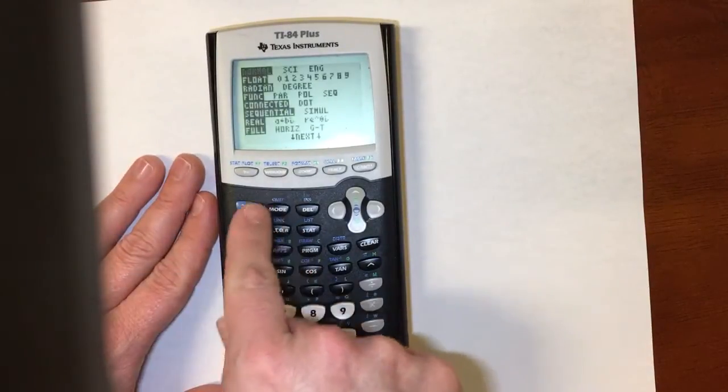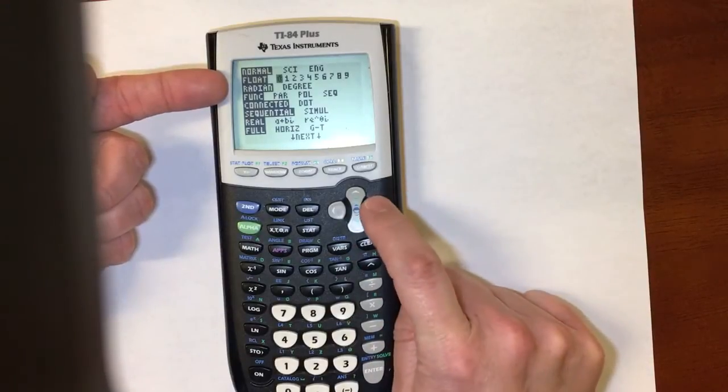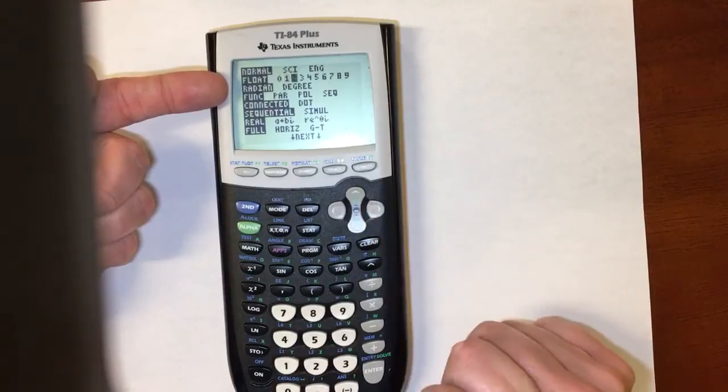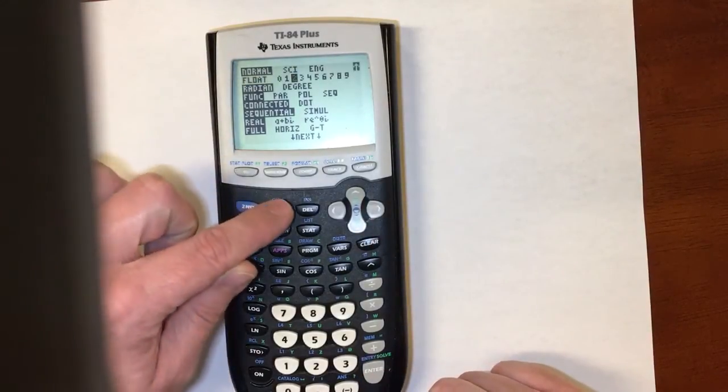So you can go to mode. We're going to go to float for the decimal. And we're going to arrow over for however many places we want. So let's say I want two decimal places. So I would hit enter and then second quit.